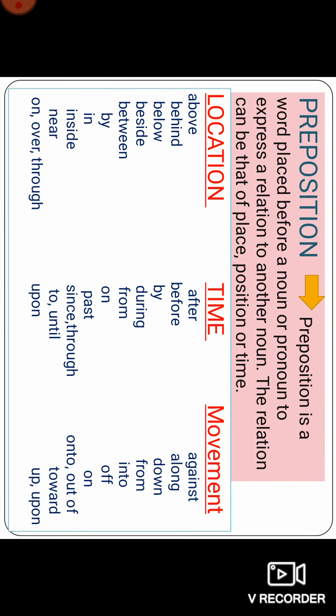So what is a preposition? A preposition is a word placed before a noun or pronoun to express a relation to another noun. Basically, prepositions have two functions. The first function is to connect the noun — all types of noun — to the rest of the sentence. The second function is to specify the position of a person or object.